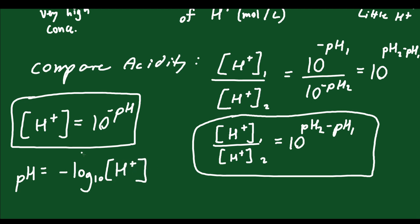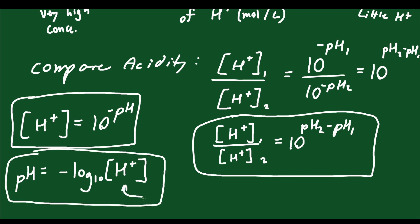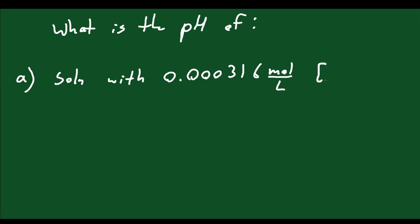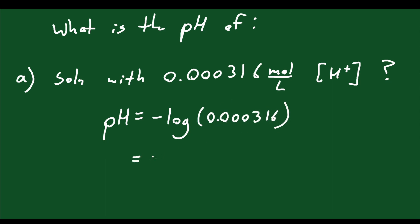If you have the concentration and want to figure out the pH, plug it into that formula — as long as the concentration is in moles per liter. This is important for chemistry class. Let's solve some questions. For part A: what is the pH of a solution with 0.000316 moles per liter of hydrogen ions? pH equals negative log of 0.000316, and the answer is 3.5.